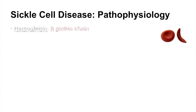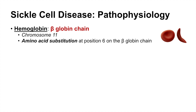What is some of the pathophysiology of sickle cell disease? It all has to do with the hemoglobin beta globin chain — the beta globin chain of hemoglobin is affected. This beta globin chain is encoded on chromosome 11. In sickle cell disease, it's all due to an amino acid substitution at position 6 on the beta globin chain — a substitution from glutamic acid to valine. So there is only a single point mutation changing glutamic acid to valine at position 6 on the beta globin chain, and this is what causes the deformed red blood cell shape.